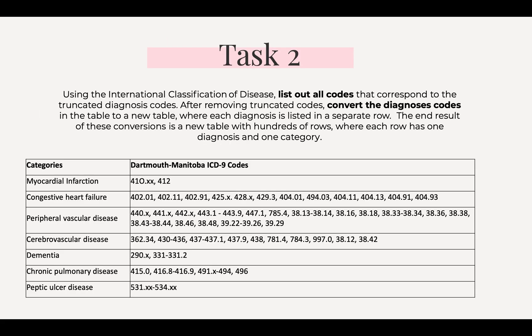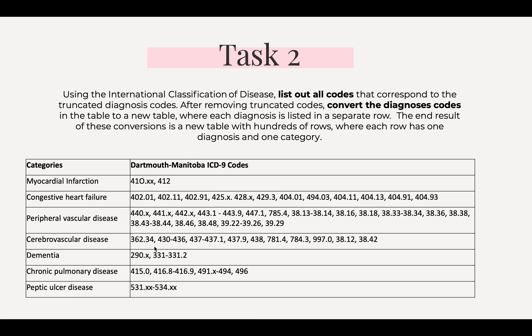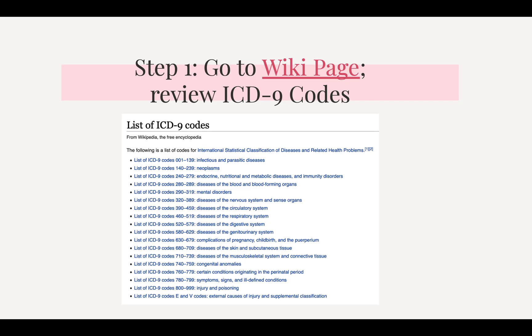Task Two is to use the ICD codes and list out all the codes that correspond to the diagnosis codes shown below. Basically, we're going to create an Excel sheet with all of these different codes that best describe these categories. First, go onto the wiki page provided for you — if you can't find it, it's hyperlinked in the slide. Then review these ICD-9 codes.